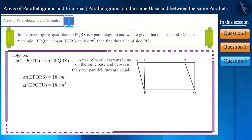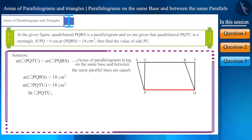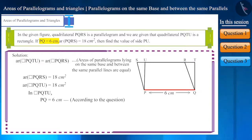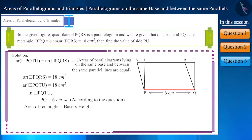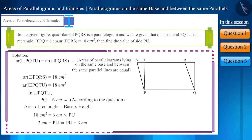In rectangle PQTU, PQ is the base and PU is the height, where base PQ is equal to 6 cm. Using the formula for the area of a rectangle — base multiplied by height — we get 18 = 6 × PU, and thus we get the value of PU as 3 cm.